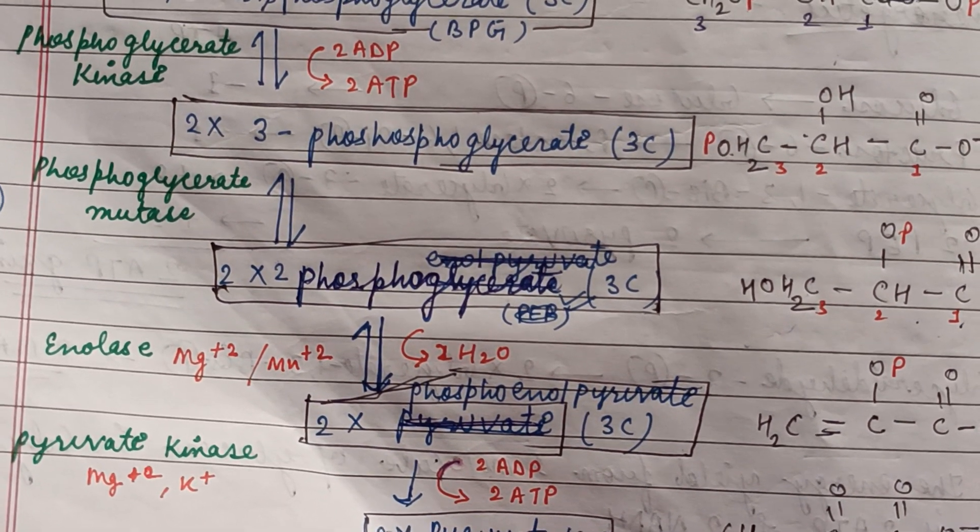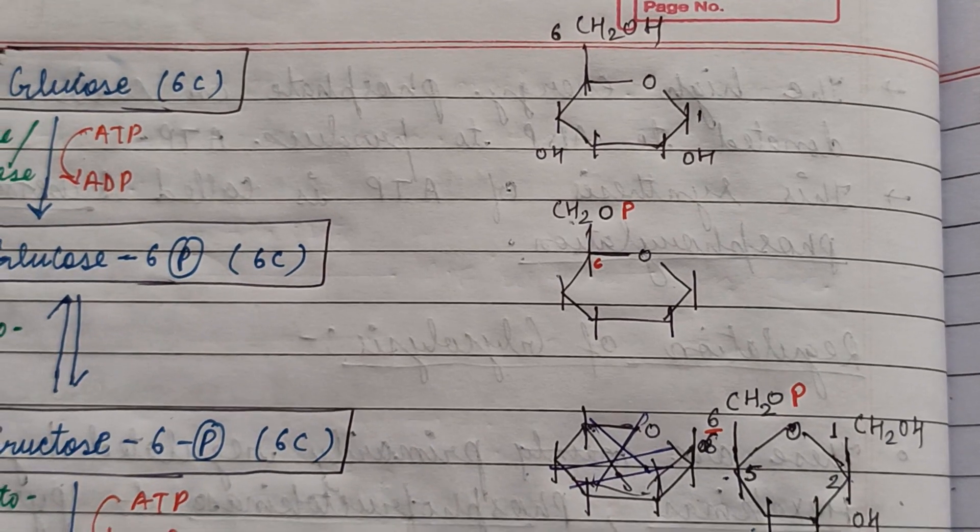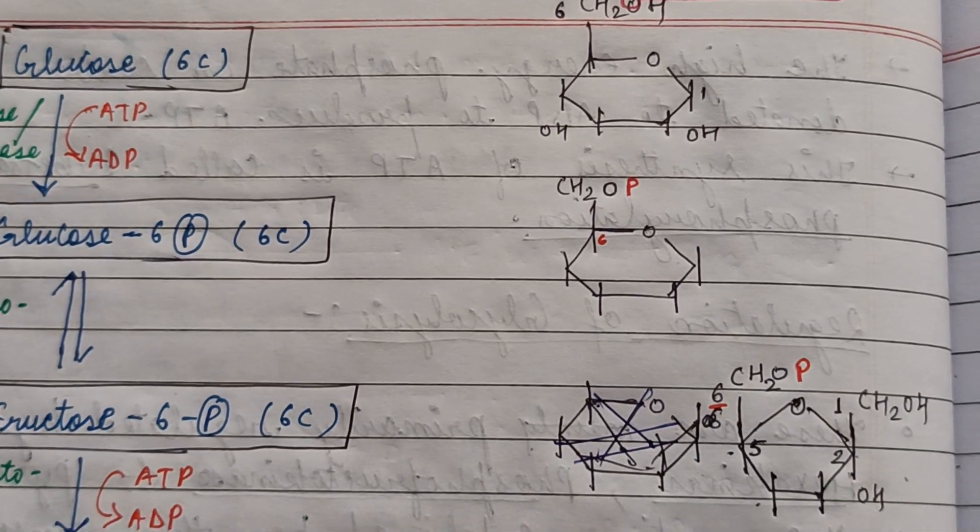The two molecules of phosphoenolpyruvate are converted and form two moles of pyruvate.